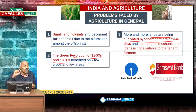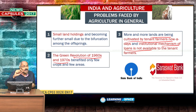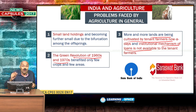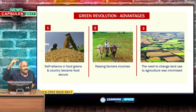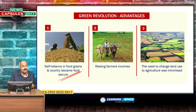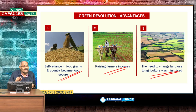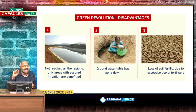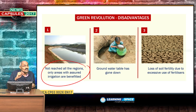Tenant farmers are cultivating more and more lands, and the biggest drawback is that institutional loan mechanisms are not available to them. Tenant farmers cannot access loans from banks or cooperative banks and are dependent on informal loans from money lenders at exorbitant high rates. The advantages of the green revolution include self-reliance in food grains, food security, and raised farmer incomes, but it did not reach all regions.